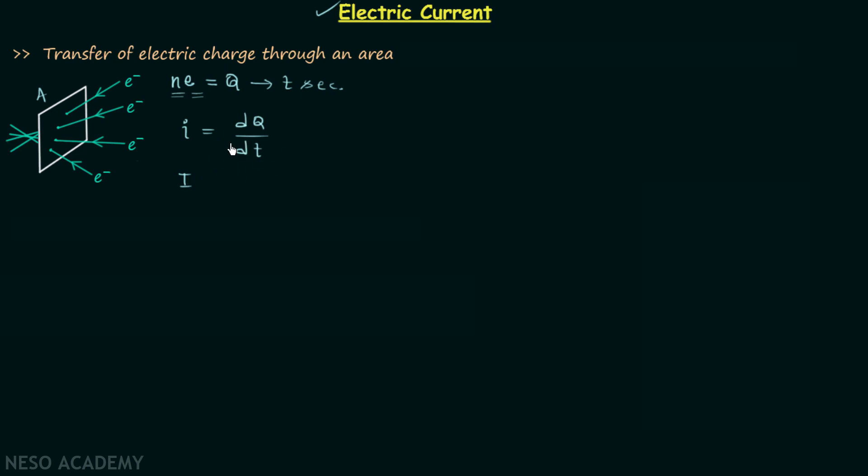From here we get another way to define electric current. We can see that electric current is equal to the time rate of change of charge, i = dQ/dt.